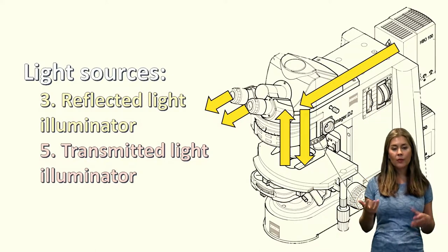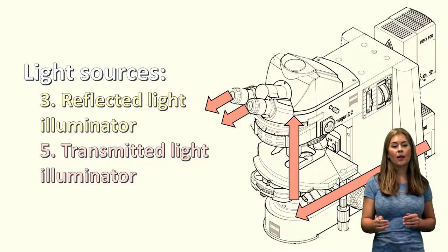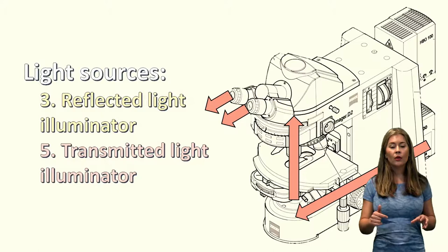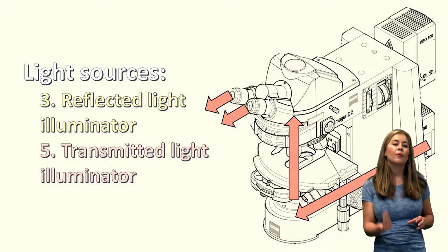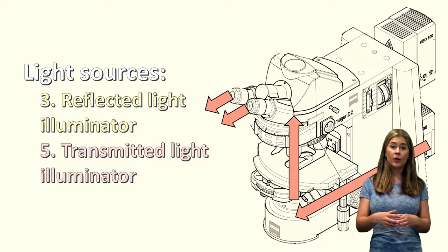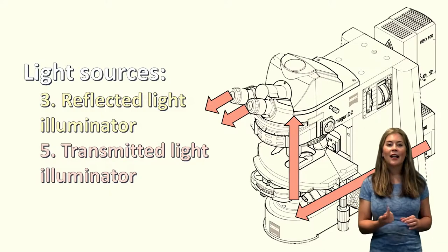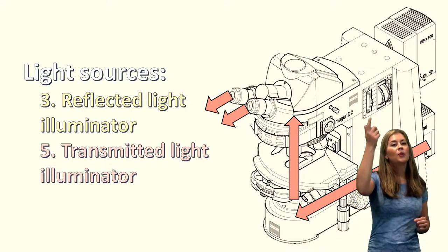And the second option which is what we use for bright field is the transmitted light illuminator which is at the bottom at the back. So that light comes through the base of the microscope and then up through the bottom through that illuminated spherical disc that you'll see that you have to remember to take the cover off. Light comes through, through your specimen and up to your eyes.